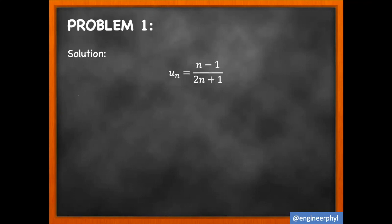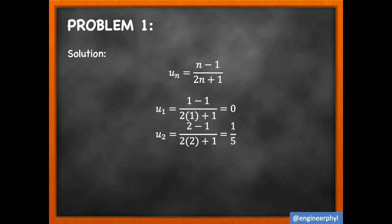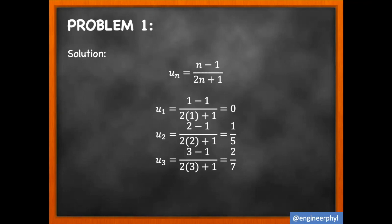Letting n = 1, we have (1 − 1) / (2×1 + 1) = 0. Now if we let n = 2 for u₂, it is (2 − 1) / (2×2 + 1) = 1/5. For n = 3, represented by u₃, we have (3 − 1) / (2×3 + 1) = 2/7.